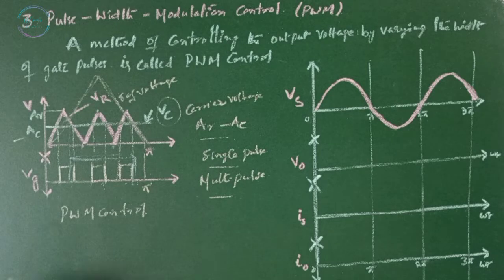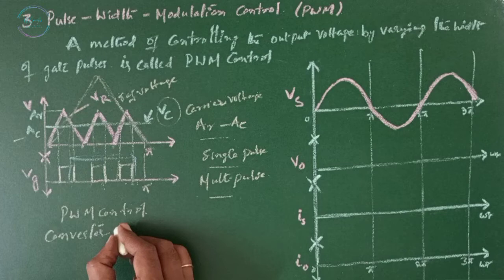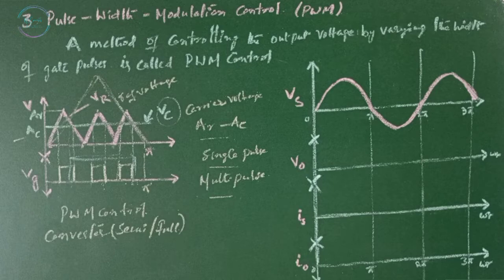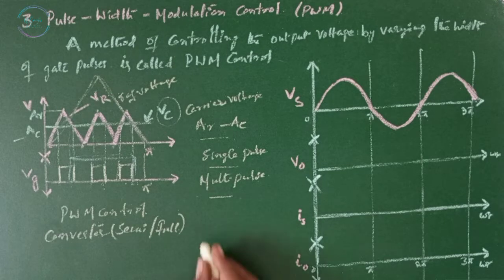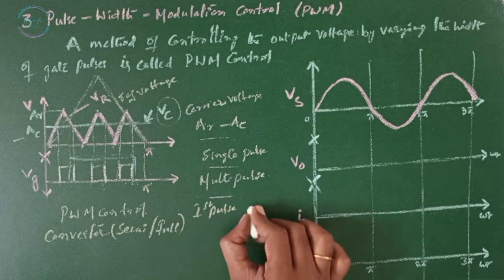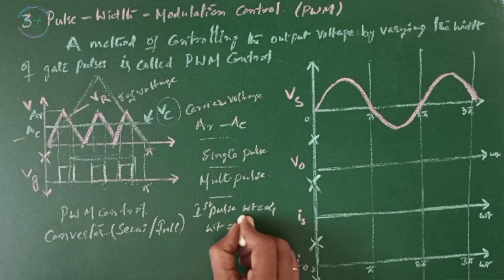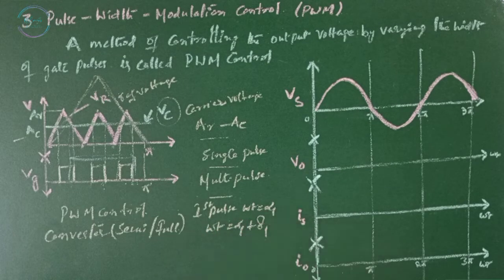If we considered a converter, semi-converter or full converter, the output voltage and the performance parameters of converters can be determined in two steps. Now considering only one pair of pulse, such that first pulse start set omega t equals to alpha 1 and end set omega t equals to alpha 1 plus delta 1.